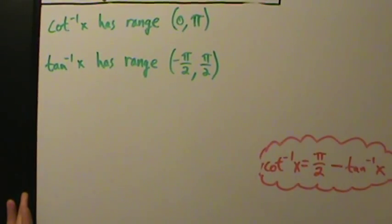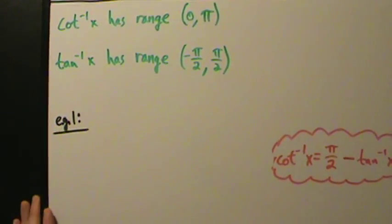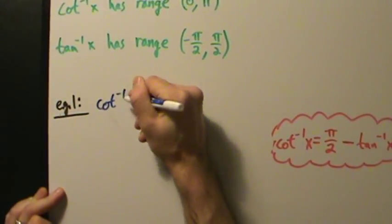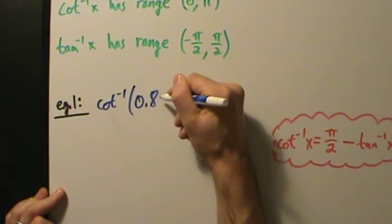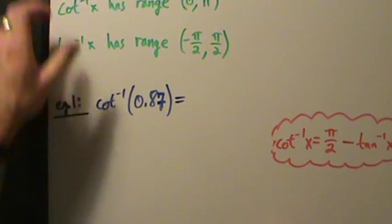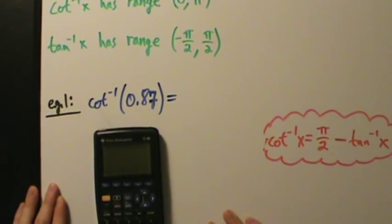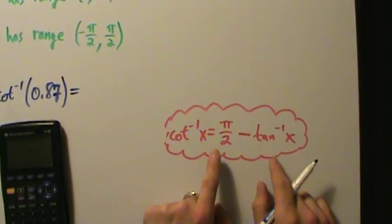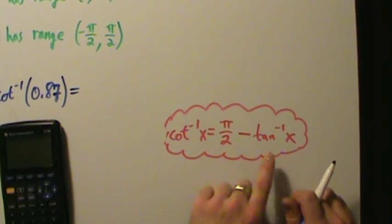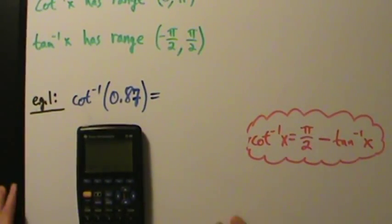Let's do three simple examples — we're just going to toss values into a calculator. Example 1: inverse cotangent of 0.87. Remember, the domain of the inverse cotangent function is all real numbers, so we can take the inverse cotangent of anything we want. This formula is actually simpler than the previous two videos — there are no reciprocals, just π/2 minus another trig function. And since both inverse cotangent and inverse tangent have domain of all real numbers, there are no domain restrictions to worry about.